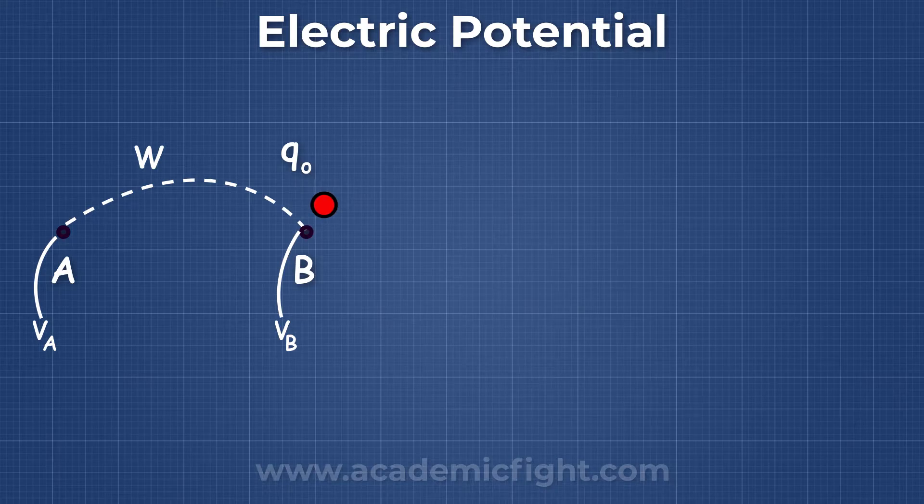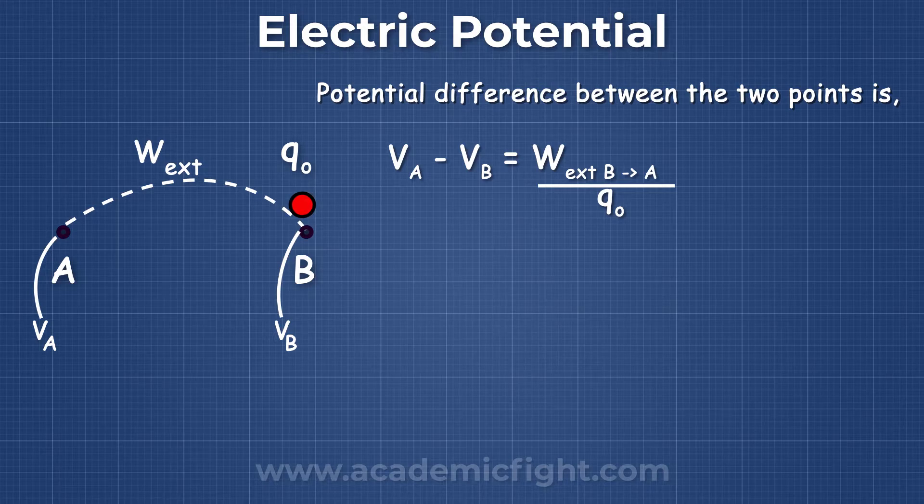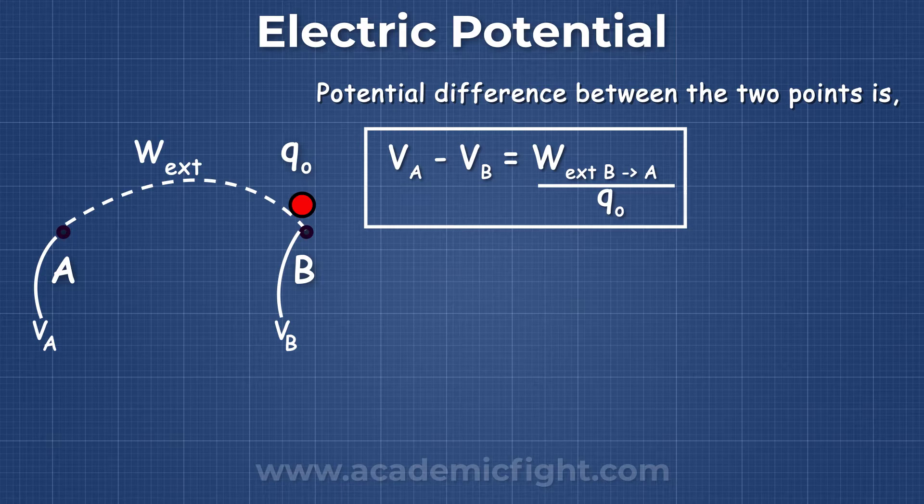W, and since we are doing external work, therefore we write W external. So according to the definition, potential difference between the two points is VA minus VB is equal to W external from B to A divided by Q0.